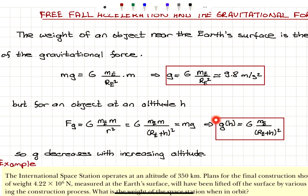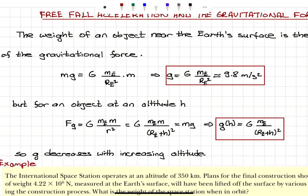How does gravitational acceleration behave as a function of height? It basically decreases with increasing altitude — it has an h dependence. Considering that the radius of the Earth is 6,370 kilometers, if we are only a few meters away from the surface, that h value is negligible compared to the radius of the Earth, so g is approximately independent of h. This approximation holds only when h is not numerically comparable to the radius of the Earth.